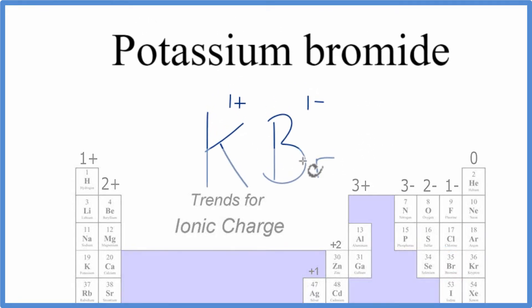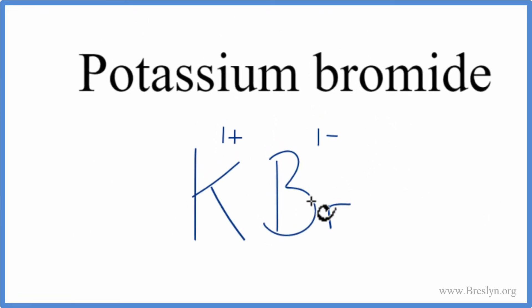So, these charges need to add up to 0. We will have a net charge of 0 for the whole compound here. Plus 1, minus 1, that adds up to 0. So, this is the formula for potassium bromide.